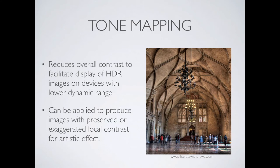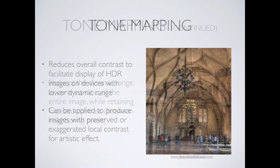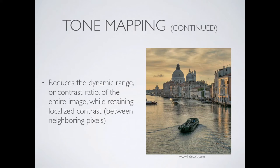Tone mapping is the process by which we convert an image into something that looks like high dynamic range, or looks like it does when you're actually in a particular scene. What we're doing is reducing the overall contrast of the image while trying to keep localized contrast. We're still trying to see differences in detail — we're not washing out the image. We're adjusting dark areas to be lighter and light areas to be darker, doing both sides. If we go a little too far, we can get a very exaggerated or painterly effect.